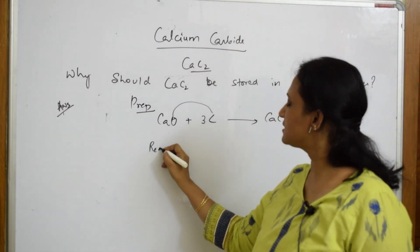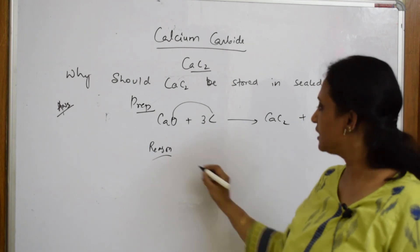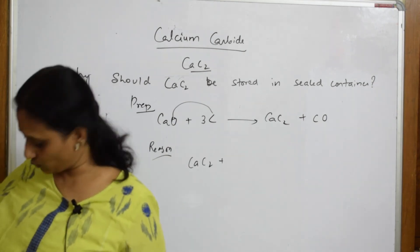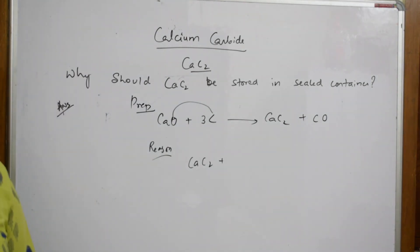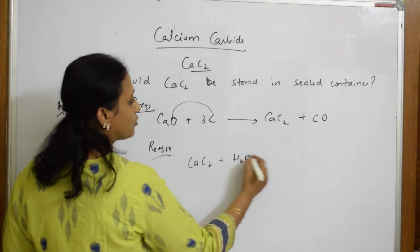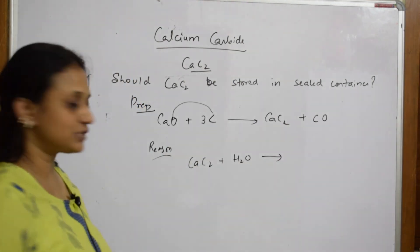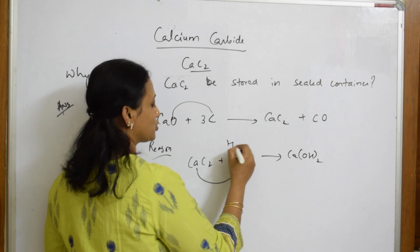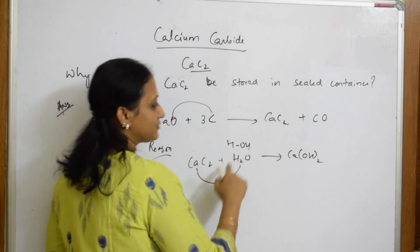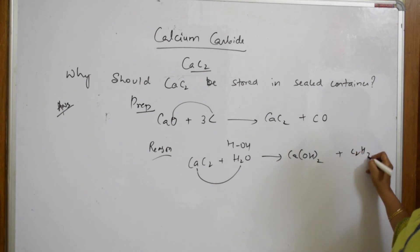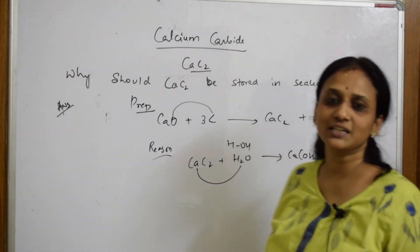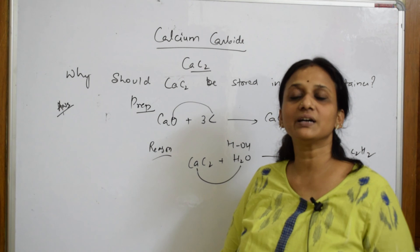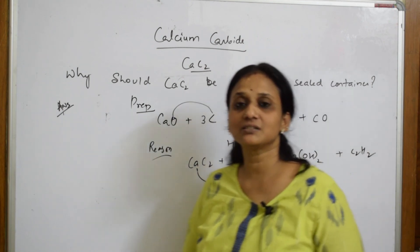The reason calcium carbide must be stored in sealed containers: if it is exposed to moisture or water in the atmosphere, it absorbs that water and reacts to form calcium hydroxide and acetylene gas (C₂H₂). To prevent this reaction with atmospheric moisture, sealed containers are used.